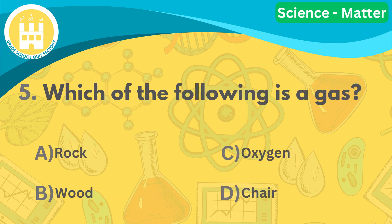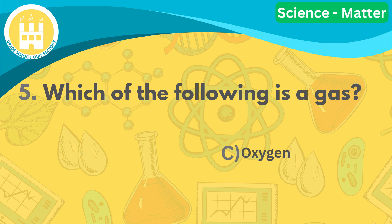Question five, which of the following is a gas? The correct answer is C, oxygen. Gases are substances that have no definite shape or volume.